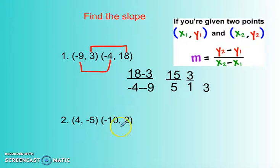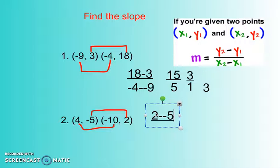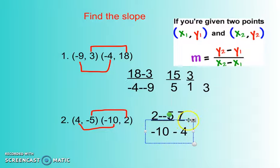How about the one below? If I draw a line between the Y's, draw a line between the X's just to keep them straight, and then show my work. So on the top, I would do 2 minus a negative 5, which I know is a positive 7. And then below, negative 10 minus 4 is negative 14.